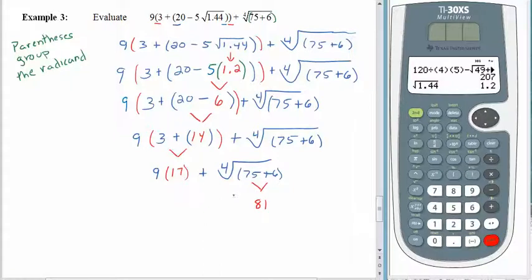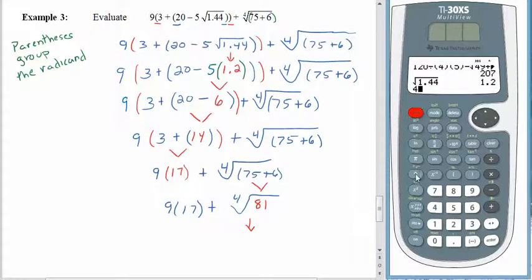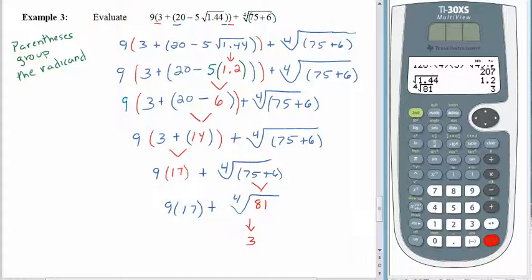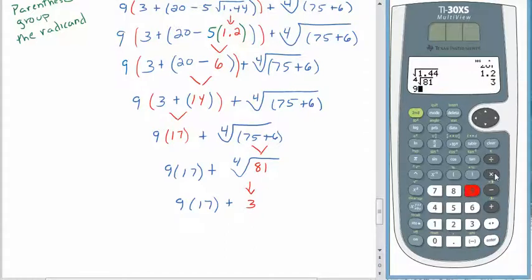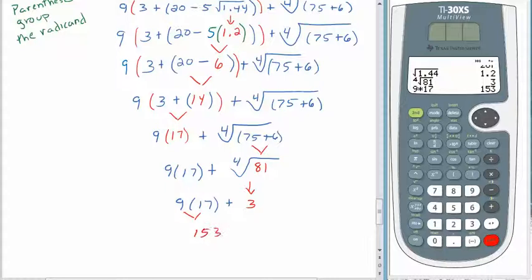We haven't done anything with the fourth root yet, so don't forget to bring it down. Roots come before multiplication. The fourth root of 81 — the index is 4, use the second key to access the general root function, type in 81 — the fourth root of 81 is 3. Bring everything else down. Multiplication or addition? Multiplication comes first. 9 times 17 is 153. Plus 3 gives us 156.